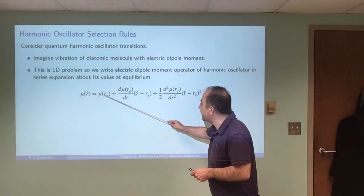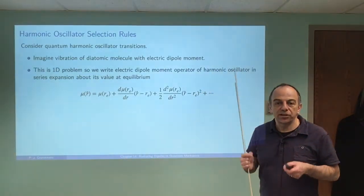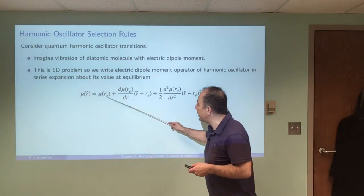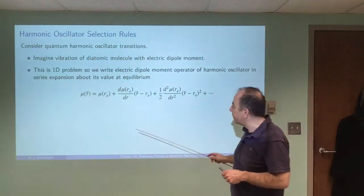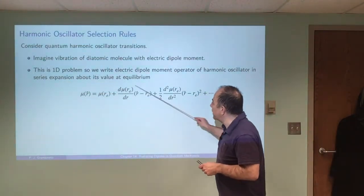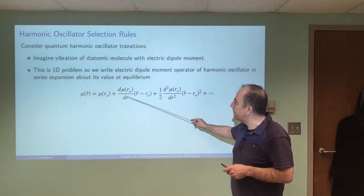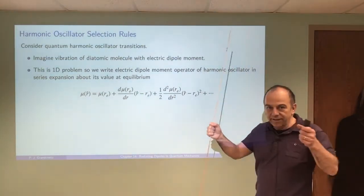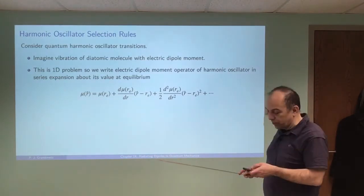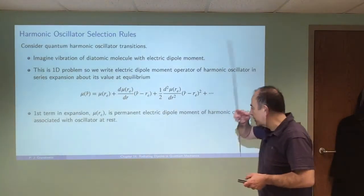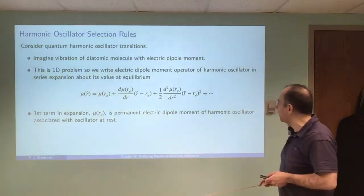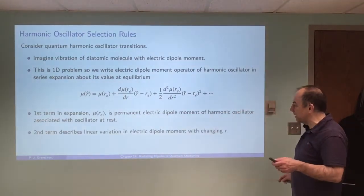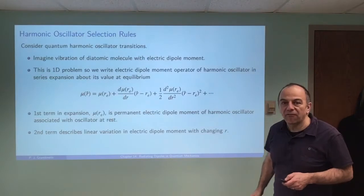We're going to start out by doing a Taylor series expansion of the electric dipole moment for this molecule. The leading term is the electric dipole moment associated with the atoms at their equilibrium position — that's the equilibrium bond length in a diatomic molecule. The next term in this expansion is the rate of change of that dipole moment with changing distance, multiplied by the deviation away from equilibrium, and then there will be higher order terms, which we'll ignore.